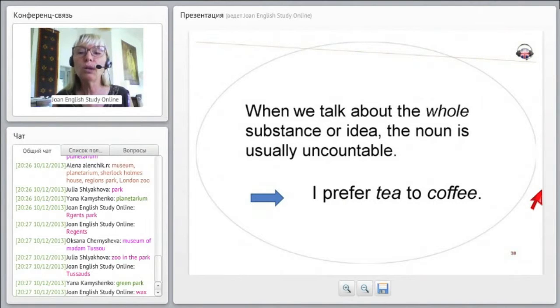When we talk about the whole substance or idea, the noun is usually uncountable. So I prefer tea to coffee. You'll notice that both of these are liquids. So all liquids and gases are non-countable.